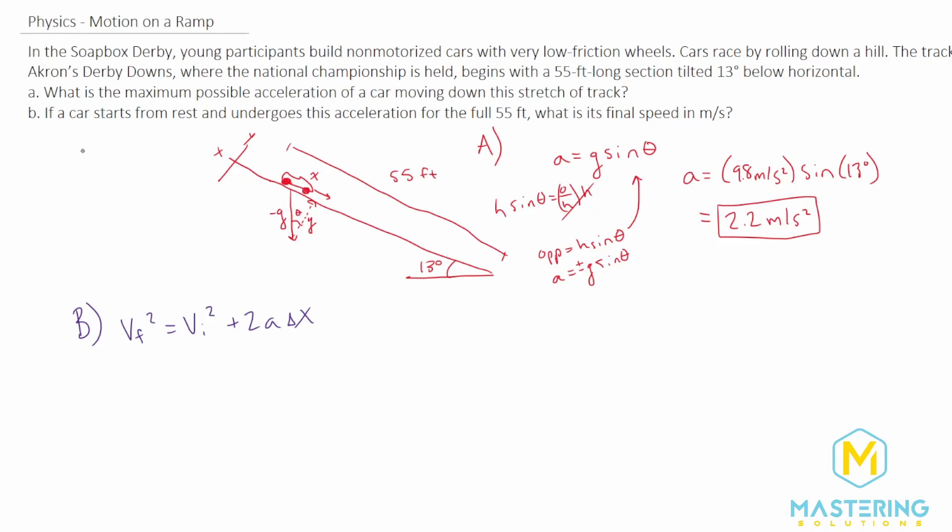We want to solve for the final velocity. The initial velocity for part B, they tell us it starts from rest, so this is zero. And we need to take the square root of both sides because we want v final isolated. So velocity final is equal to the square root of 2 times the acceleration times delta x.